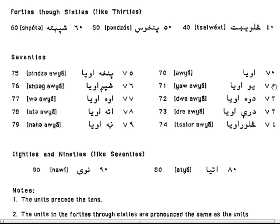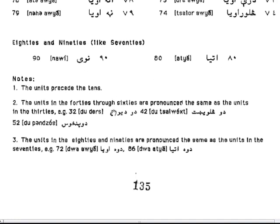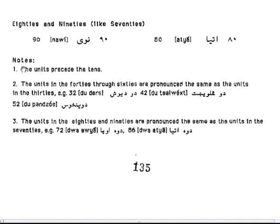70s. Let's start off with 70s. 80s and 90s are similar to 70s. 80s: Atya, Nui. Again, the units precede the tens — the ones precede the tens.